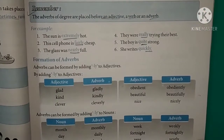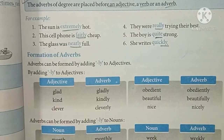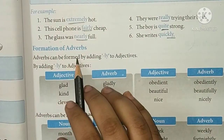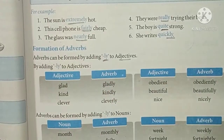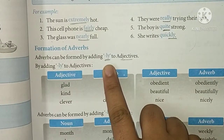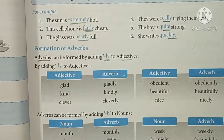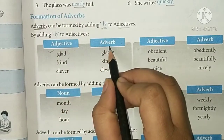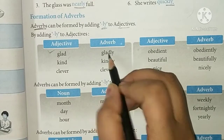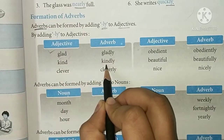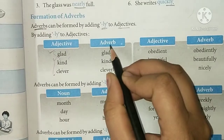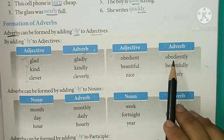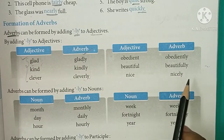Now, Formation of Adverbs. Adverbs can be formed by adding -ly to adjectives. By adding -ly to an adjective, we form an adverb. Examples: glad → gladly, kind → kindly, clever → cleverly, obedient → obediently, beautiful → beautifully, nice → nicely.